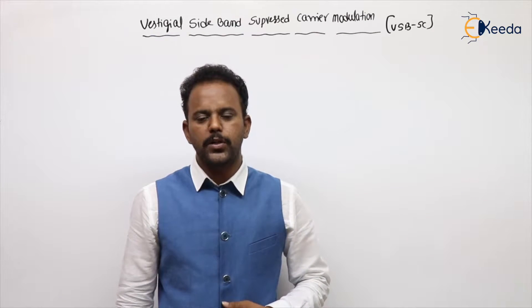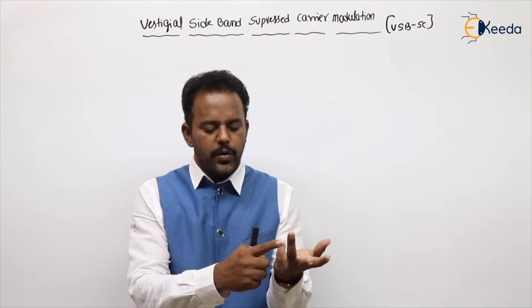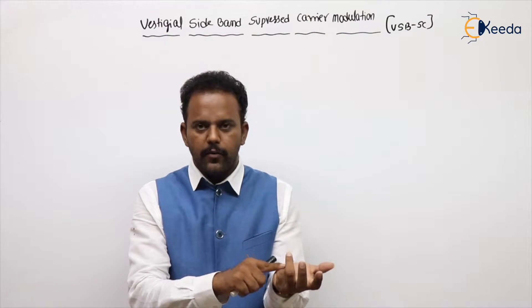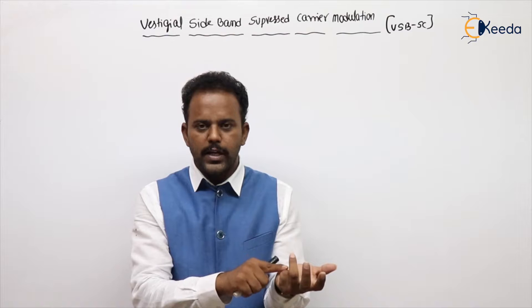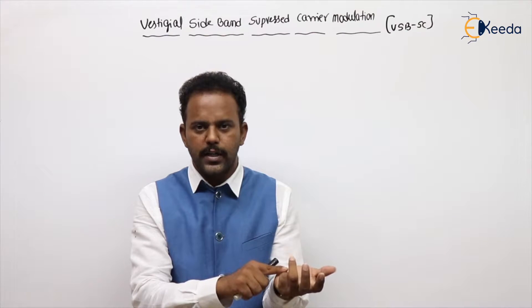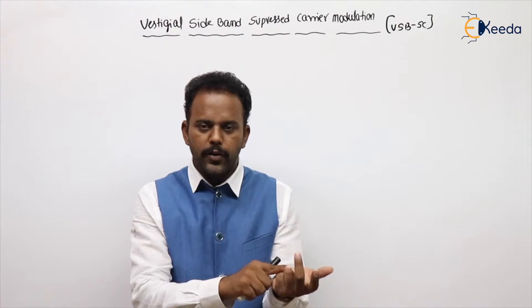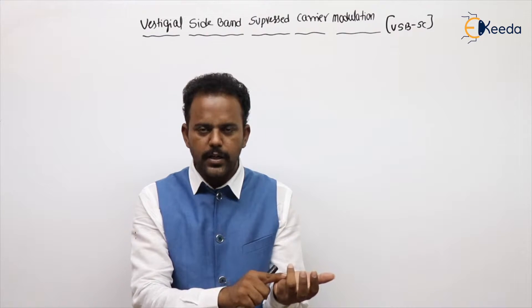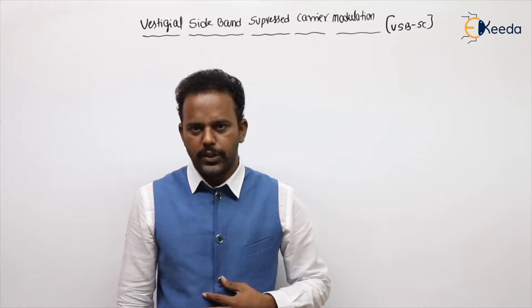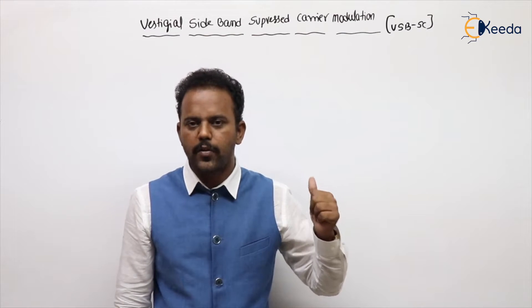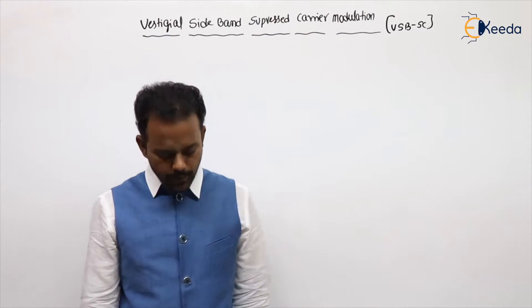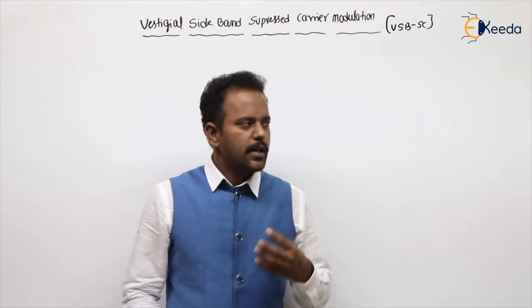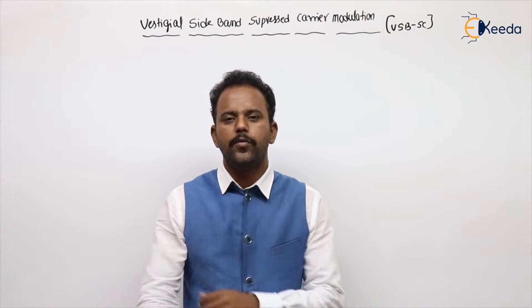For VSBSC, there are two possible objective questions: Where are we using VSBSC? — for transmission of video signals in television. What is the bandwidth of a TV channel? — 7 MHz. If VSBSC is not in the options, select Amplitude Modulation, because VSBSC is a variant of AM.